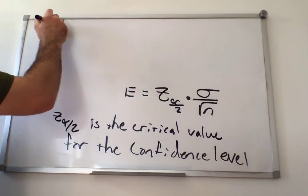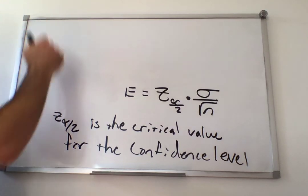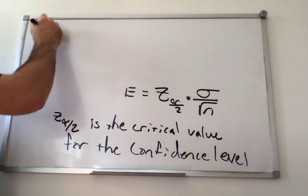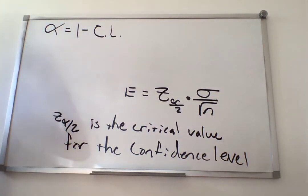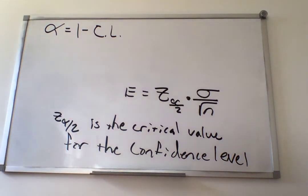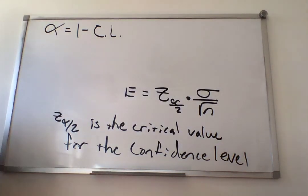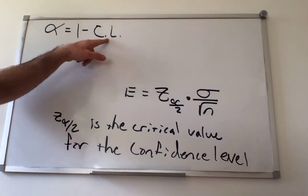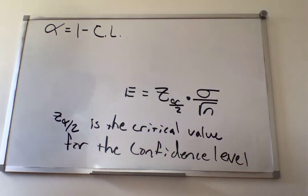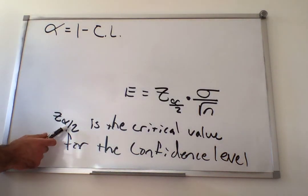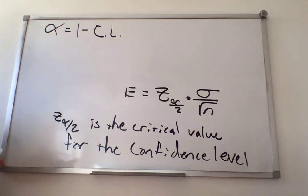If we have our confidence level and need to find alpha, alpha is equal to 1 minus the confidence level. Normally, the confidence level is given as a percentage. When you do this calculation, you have to turn it into a decimal. So if this was a 95% confidence level, I would turn it into 0.95 and then do the subtraction. Then you take that alpha value and divide it by 2.